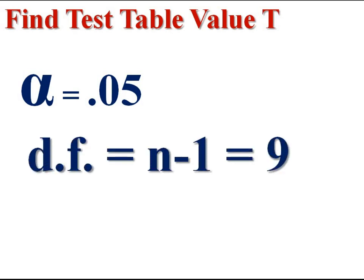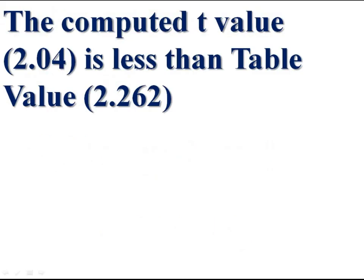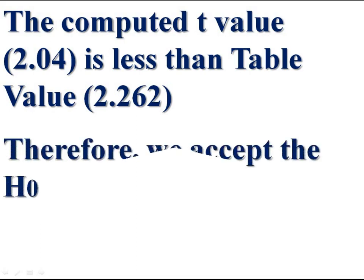Then find table value. At 5% level of significance alpha 0.05, degrees of freedom is number of pairs minus 1, the table value being 2.262. Then compare the table value with computed value. Our computed t value is 2.04 and table value 2.262. Then we can see the computed test statistic is less than table value. Therefore, we accept the null hypothesis.